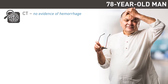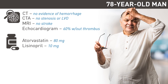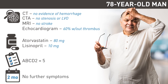The patient's head CT showed no evidence of hemorrhage, and his CTA showed no significant stenosis or large vessel occlusion. MRI showed no stroke. His echocardiogram showed an ejection fraction of 60% without thrombus. LDL was 114, and he was sent home on 80 mg of atorvastatin, as well as 10 mg of lisinopril daily to manage his hypertension. His ABCD2 score was 5, and he was started on dual antiplatelet therapy with aspirin and clopidogrel for three weeks. He was counseled on lifestyle modification and reported no further symptoms at his two-month follow-up in the neurology clinic on aspirin monotherapy.